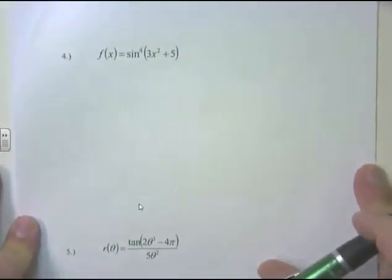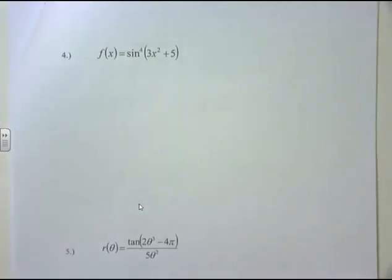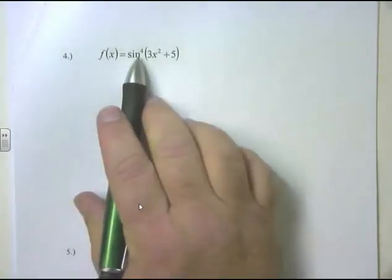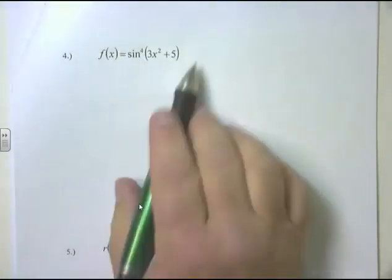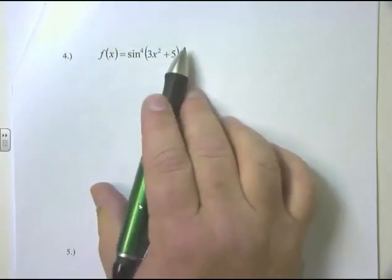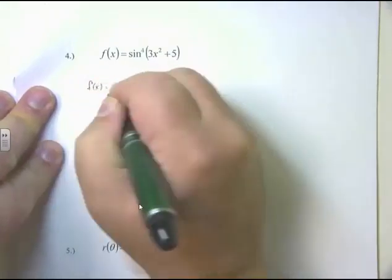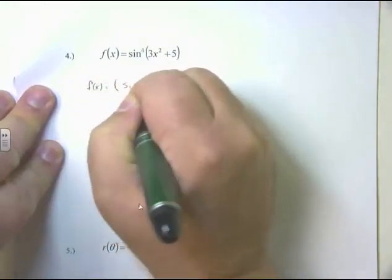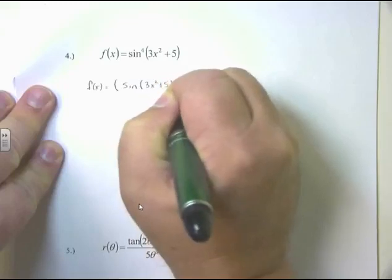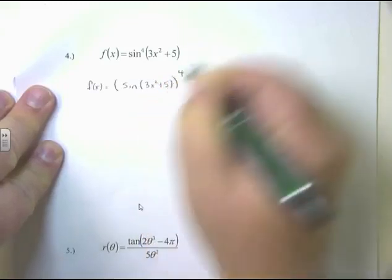Next problem: f(x) = sin⁴(3x² + 5). The first thing to do is rewrite this to understand it. That 4 means the entire trig function — the trig with its angle — is raised to the fourth power. So rewrite as f(x) = [sin(3x² + 5)]⁴. I haven't taken any derivative yet; I'm just rewriting so I can understand the problem.